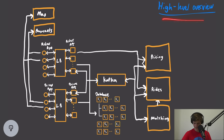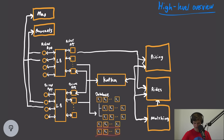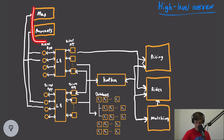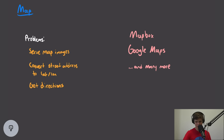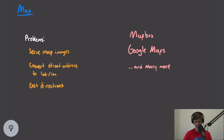Looking back at our high-level overview, our database now includes our trips database, rider database, and driver database, along with the indexes we need to efficiently access that data. The map has a few key jobs: it needs to serve map images to the user, perform geocoding — converting a street address into latitude and longitude — and provide directions so drivers can pick up riders. We could build our own map service, but services like Mapbox and Google Maps already do this, so we'll use one of those.